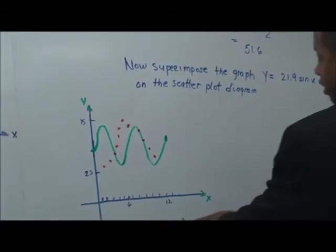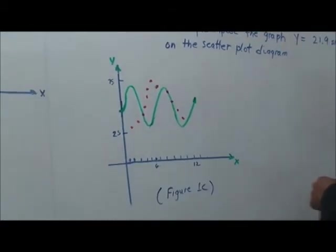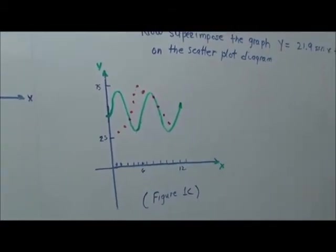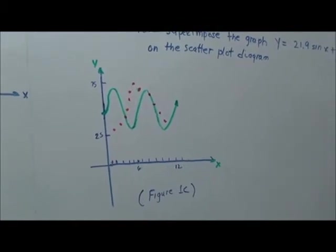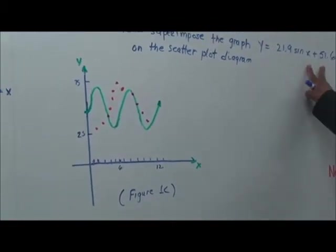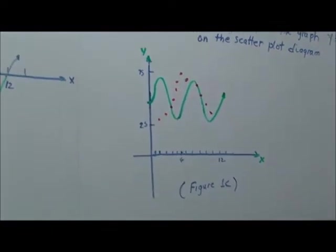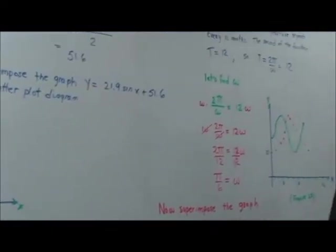So, basically y is equal to 21.9 sin x plus 51.6. Now, look at figure 1c. This is what we have here, figure 1c. All right? And so, we see how we can superimpose this graph onto here. And this is represented by that.